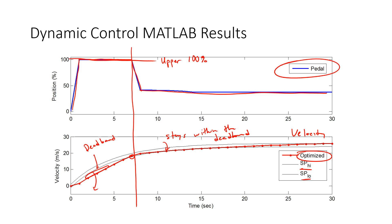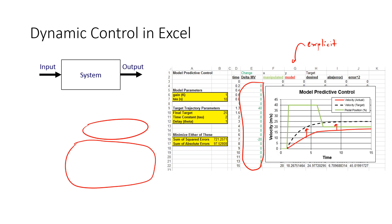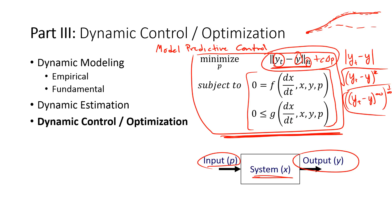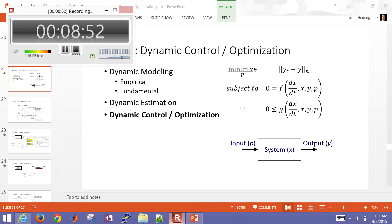That concludes this very brief introduction to dynamic optimization. The main point here is that we have this problem statement — we can put dynamic optimization into a standard optimization format or framework and then be able to solve very large scale and complex systems.